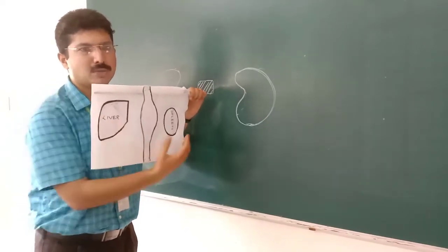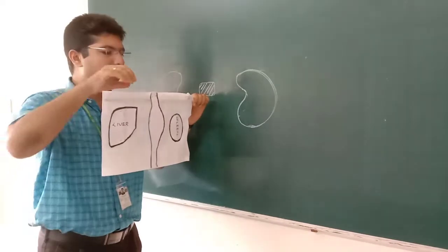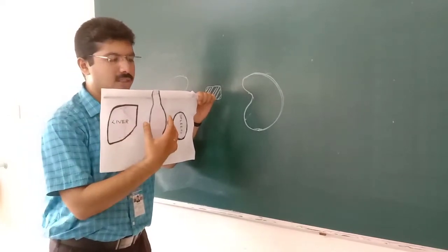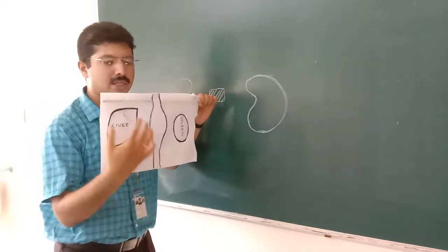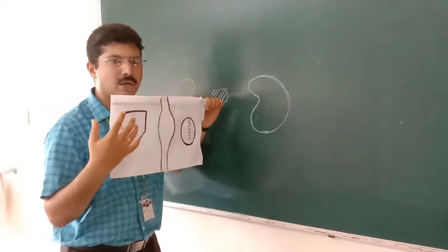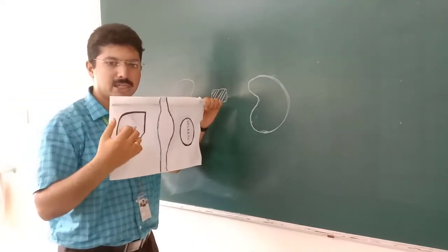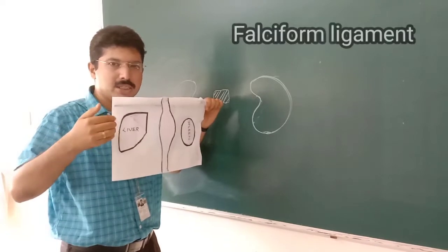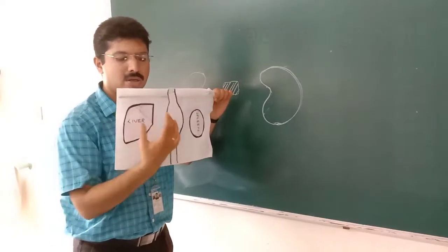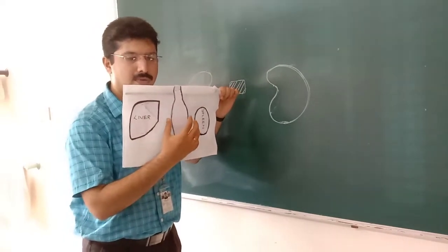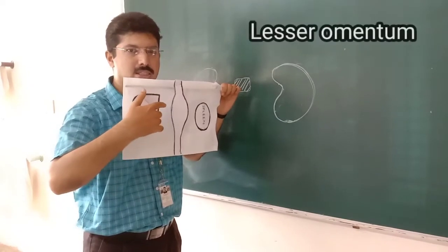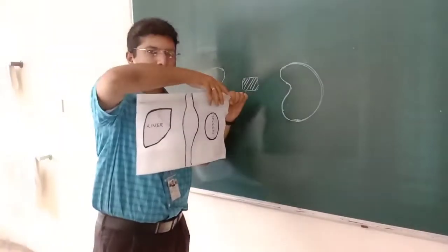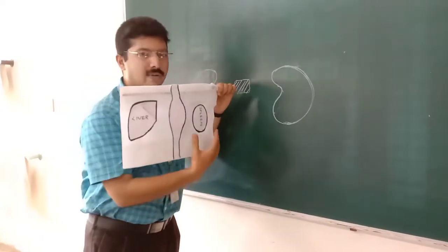We have now added the liver and spleen to the model. The peritoneal fold we are mentioning here is a double layer. The liver is placed between the stomach and the anterior abdominal folds, so the ventral mesogastrium is now divided into two. The part lying between the liver and the anterior abdominal wall is known as the falciform ligament. The region of the ventral mesogastrium lying between the stomach and the liver is known as the lesser omentum.